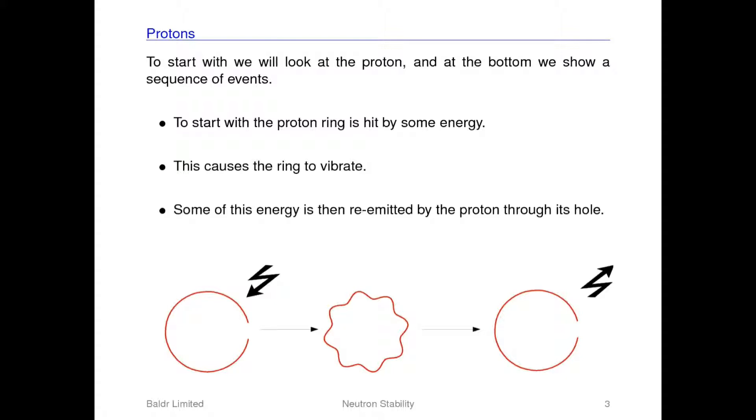However, the pictures at the bottom are overly simplified since initially the proton would be vibrating and when the energy hits it this would just cause the vibrations to increase. Finally, when the protons emit a proportion of this vibrational energy it would still be vibrating afterwards. In fact, the only time the proton would stop vibrating is if it was at absolute zero, i.e. minus 273 degrees C, as this vibrational energy is what we would commonly refer to as heat.